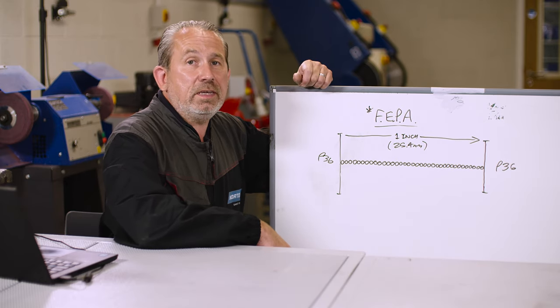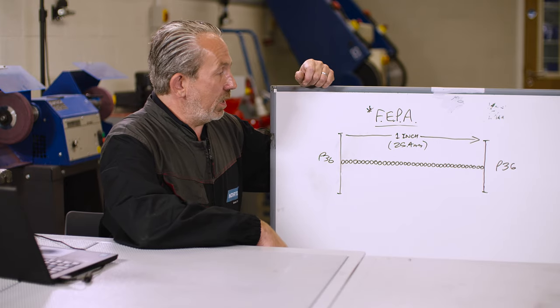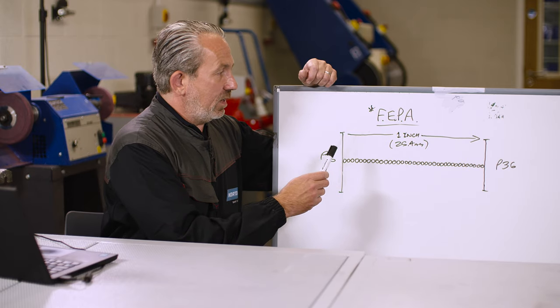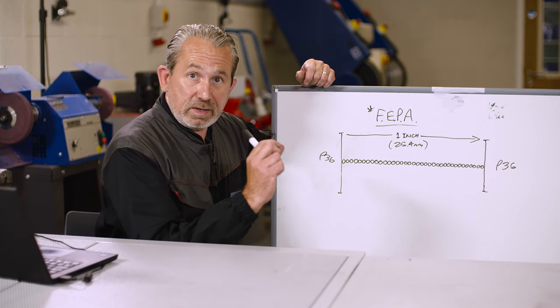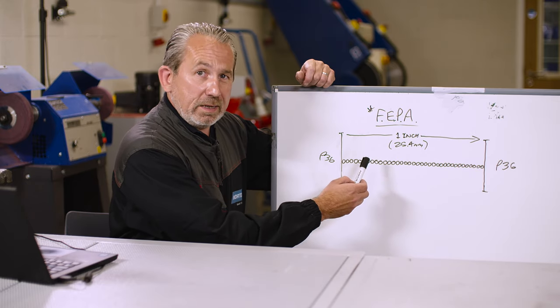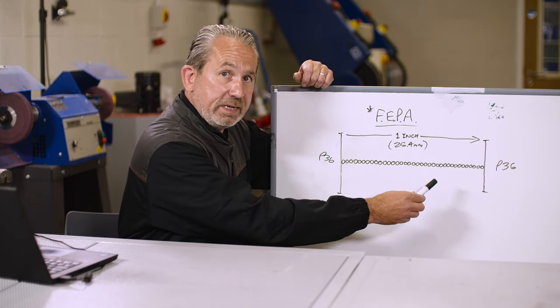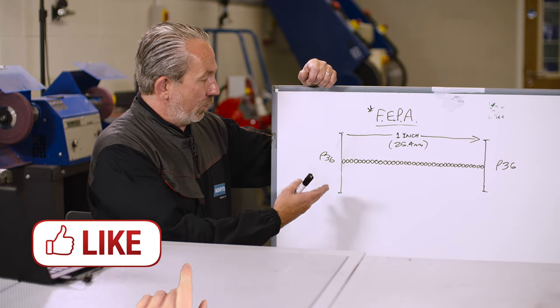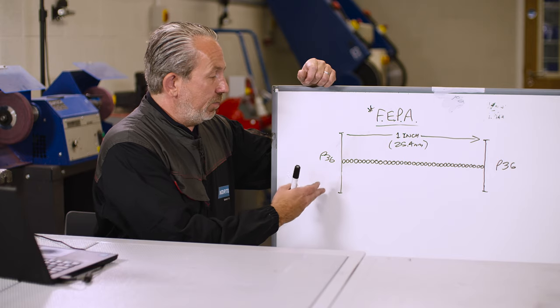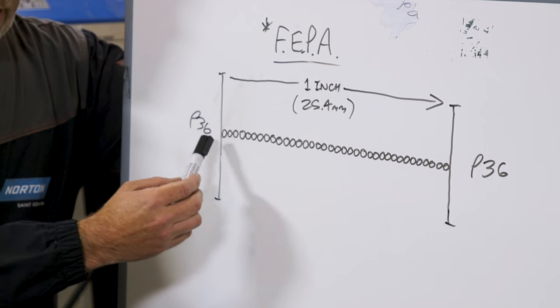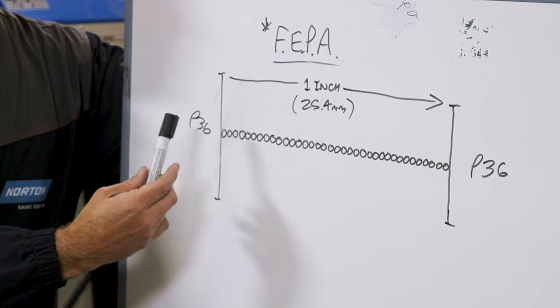So what we actually mean by particle size: it is how many particles of abrasive that have to be the same size that we can fit within one linear inch—and remember, that's one linear inch or 25.4 millimeters. So a good example: a P36 means we would have 36 grains of abrasive in a line, and they would have to fit within one linear inch. So they all have to be the same size and small enough to fit within one linear inch.